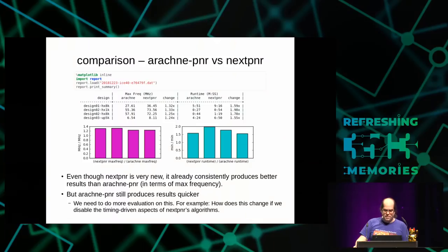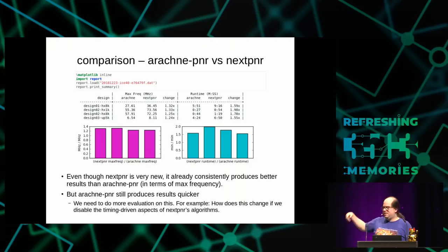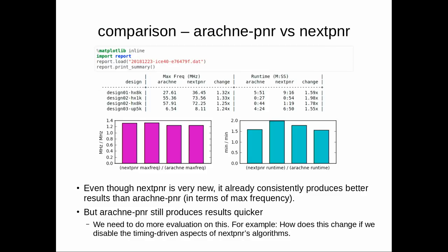Some comparisons between Arachne PNR and NextPNR: this is NextPNR-bench, with a couple of designs, each run 10 times with random seeds then averaged. On average, NextPNR has 30% better timing results (maximum frequency) than Arachne PNR. However, it's about 50–100% slower than Arachne PNR — the price you pay for doing everything timing-driven. There's more about this in the demo.